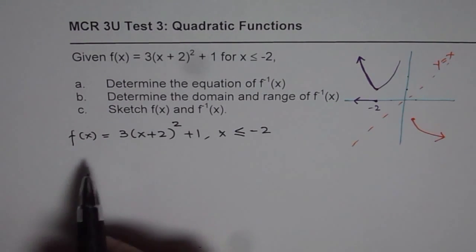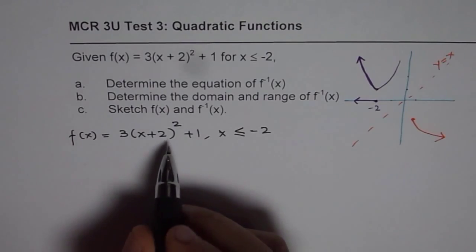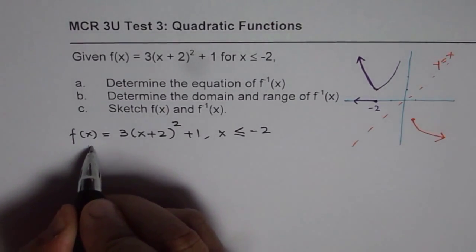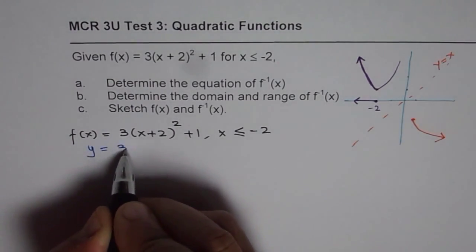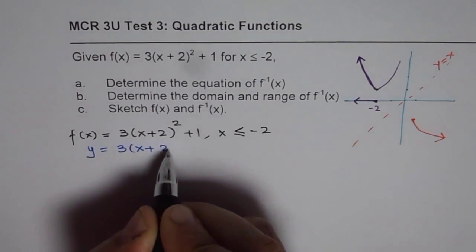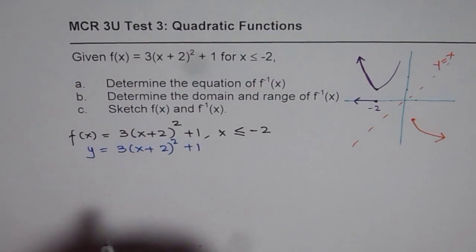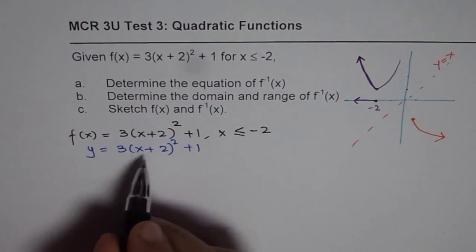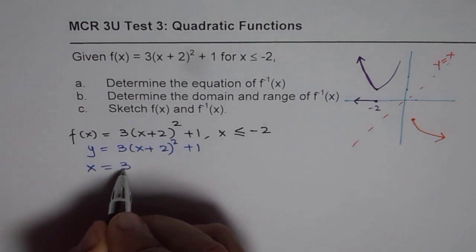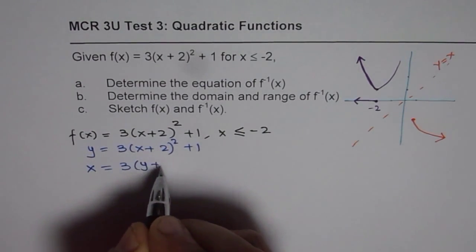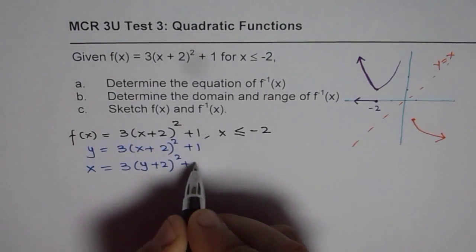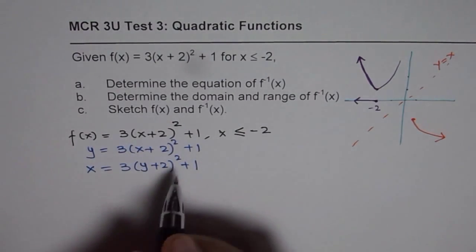Now let's find the inverse algebraically. Algebraically what we do is we write y = 3(x + 2)² + 1. And then we swap x and y to find the inverse of the function.